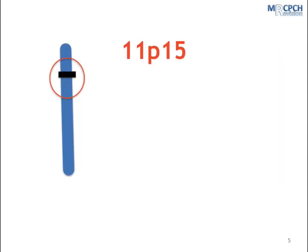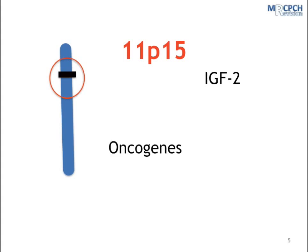The area that's affected in Beckwith-Wiedermann syndrome is along this part 11p15. This is an interesting area because it's responsible for areas such as insulin but also for insulin-like growth factor and for some oncogenes and some tumour suppressor genes.